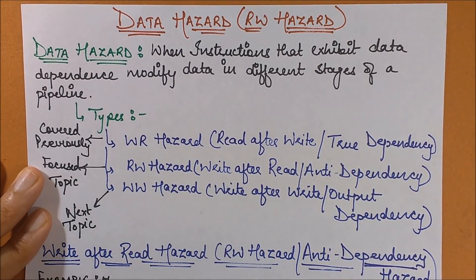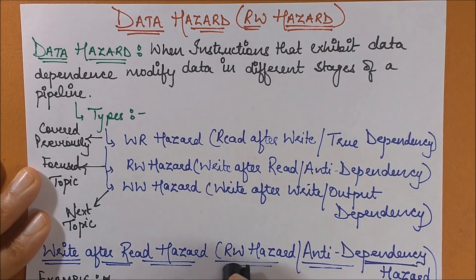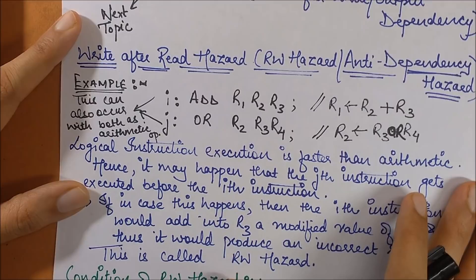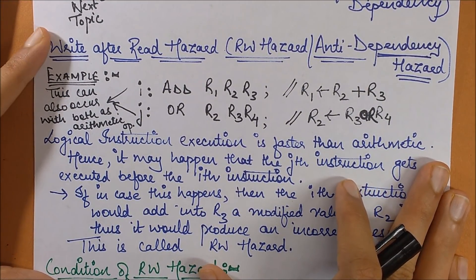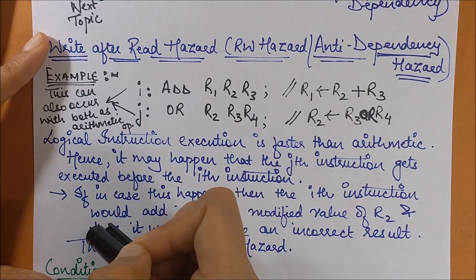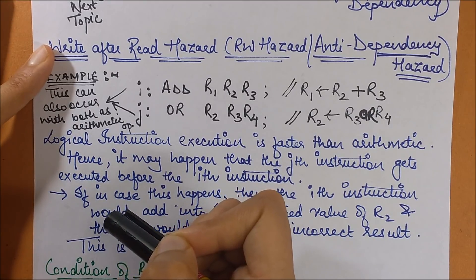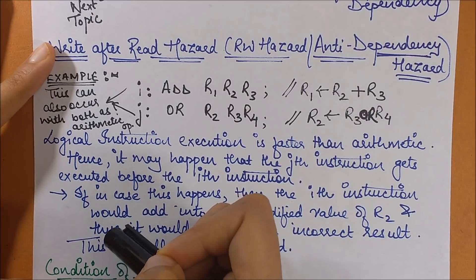So let's start with the read-write hazard problem, also called the anti-dependency hazard problem. As the name suggests, there will be a read occurring after a write. Let's see how this happens with the help of an example. We have two instructions: the first one is performing an ADD, which is an arithmetic operation, and the second one is performing an OR operation, which is a logical operation.